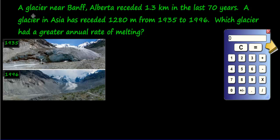Let's read this question. A glacier near Banff, Alberta receded 1.3 kilometers in the last 70 years. A glacier in Asia has receded 1,280 meters from 1935 to 1996. Which glacier has a greater annual rate of melting? You need to understand a few words. You need to know what annual means. Annual means per year, so in one year.